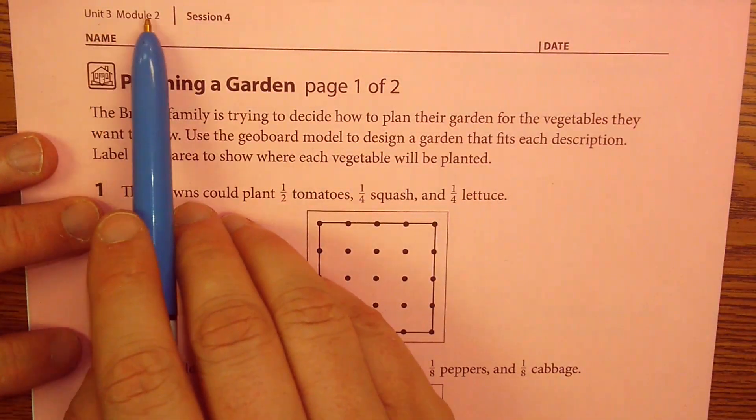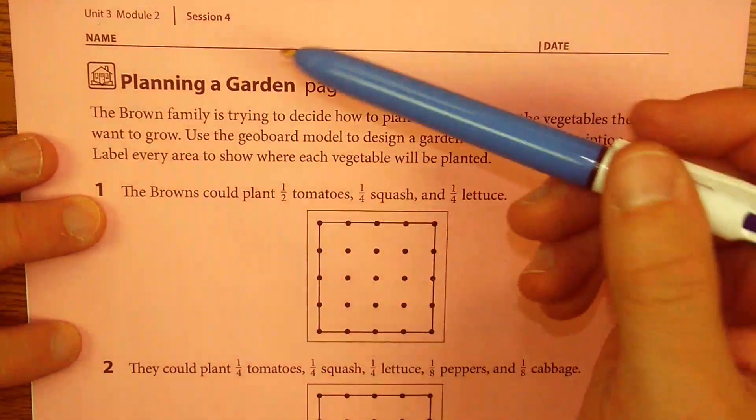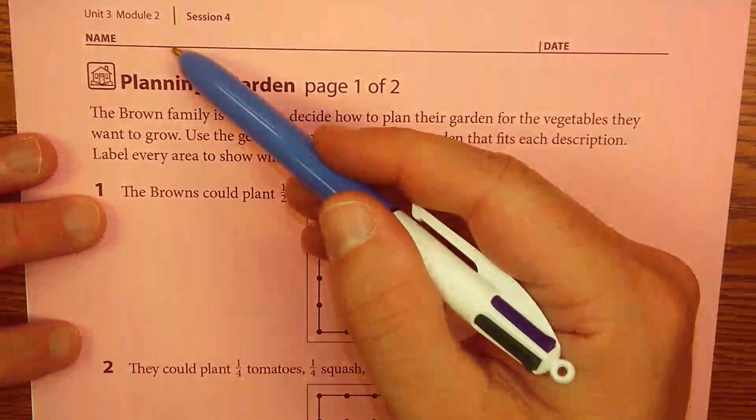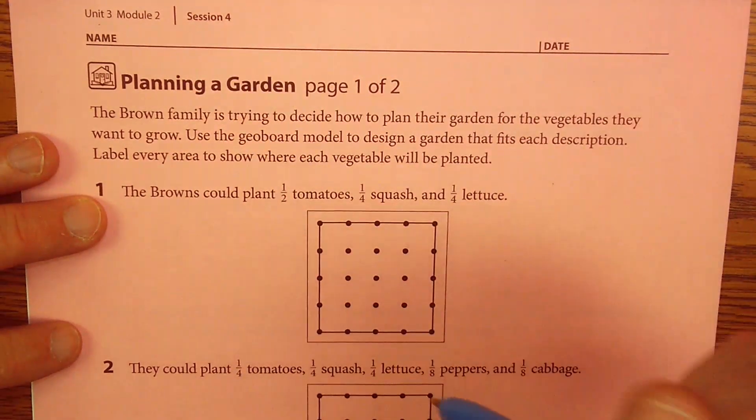Howdy! We are in Unit 3, Module 2, Session 4. This home connection is called Planning a Garden. It's a two-pager. I would put your name and number at the top. Very helpful.